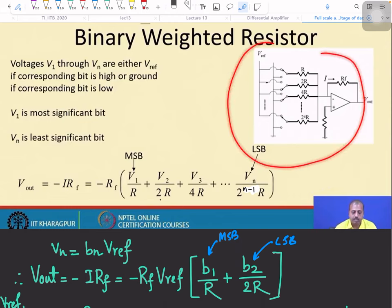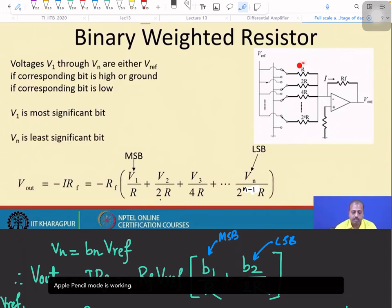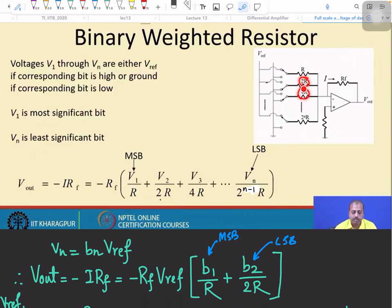So this is our binary weighted resistor DAC. Basically, when you connect a particular resistor with a reference voltage, then the current flows through that resistor and the value of current depends on the value of R. So in this case, this is R and then we have 2R and 4R. As the value of R increases, the current through the resistor decreases. This is how this binary weighted resistor works.